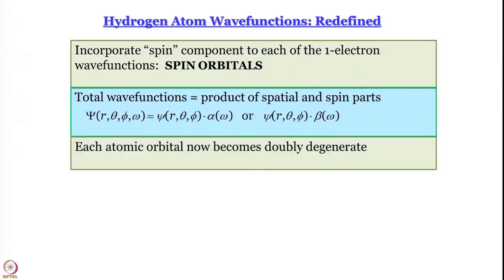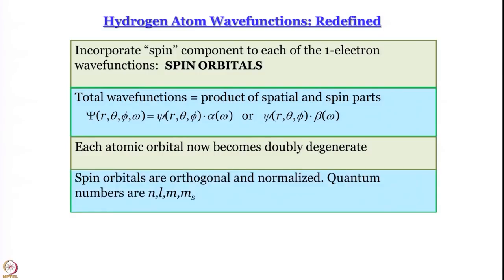Each atomic orbital is now doubly degenerate because m_s can be +1/2 or −1/2. This leads to the Pauli exclusion principle: no more than two electrons can occupy each orbital because there are only two values of m_s. Spin orbitals are orthogonal and normalized. The total set of quantum numbers we now have is n, l, m, and m_s. This was an introduction — we will develop the concept of spin in more detail and continue our discussion of atoms with more than one electron.